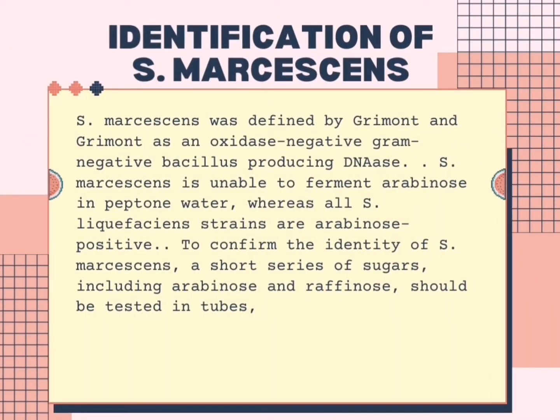The identification of Serratia marcescens: Serratia marcescens was defined by Grimont and Grimont as an oxidase-negative, gram-negative bacillus producing DNase. Serratia marcescens is able to ferment arabinose, whereas all Serratia liquefaciens strains are arabinose positive. To confirm the identity of Serratia marcescens, a short series of sugars including arabinose and raffinose should be tested.